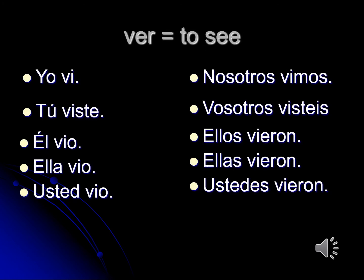The conjugation of ver in the preterite looks just like dar, except that there's a V instead of a D. So: yo vi — I saw, tú viste — you saw, él vio — he saw, ella vio — she saw, usted vio — you saw, nosotros vimos — we saw, vosotros visteis — y'all saw (Spain), ellos vieron or ellas vieron — they saw, ustedes vieron — y'all saw.